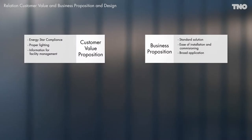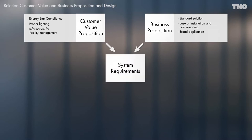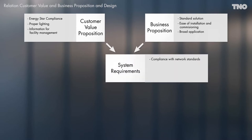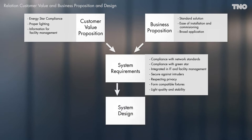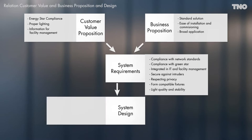The customer and the business proposition together define the system requirements — for instance, compliance with network standards and Green Star standards. The integration in IT and facility management systems defines the security and many more technical properties of the whole system. In turn, all these system requirements drive the system design, which makes choices about network topology, function allocation, network protocol, power supply issues, electronics integration, and many more technical choices.